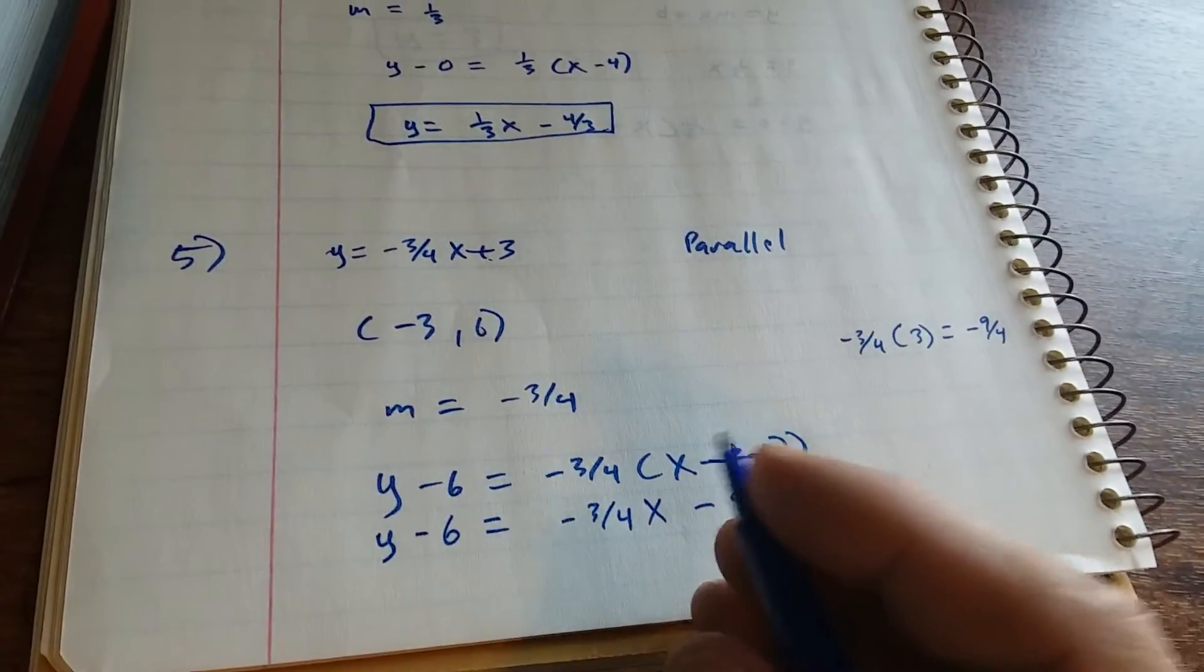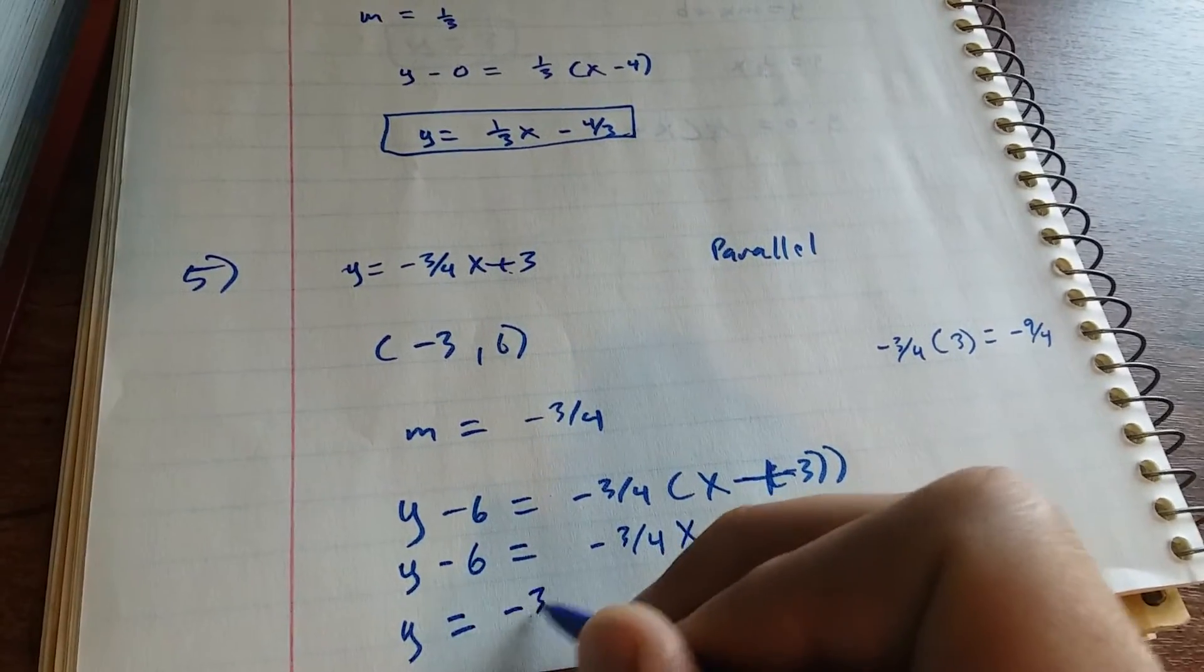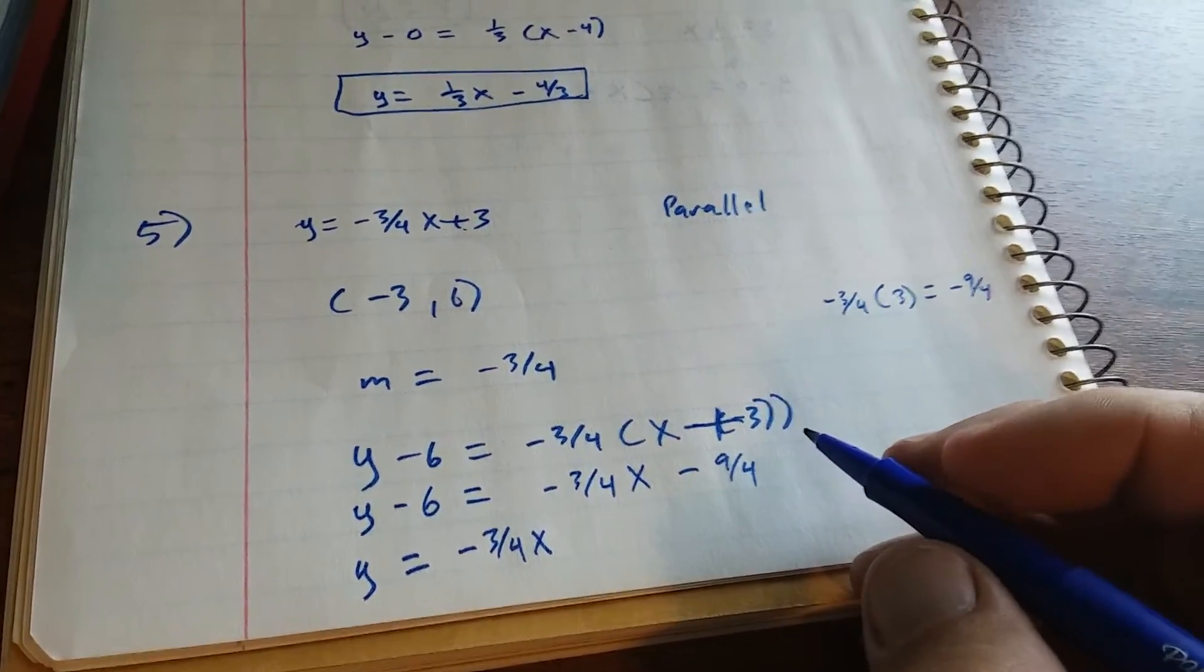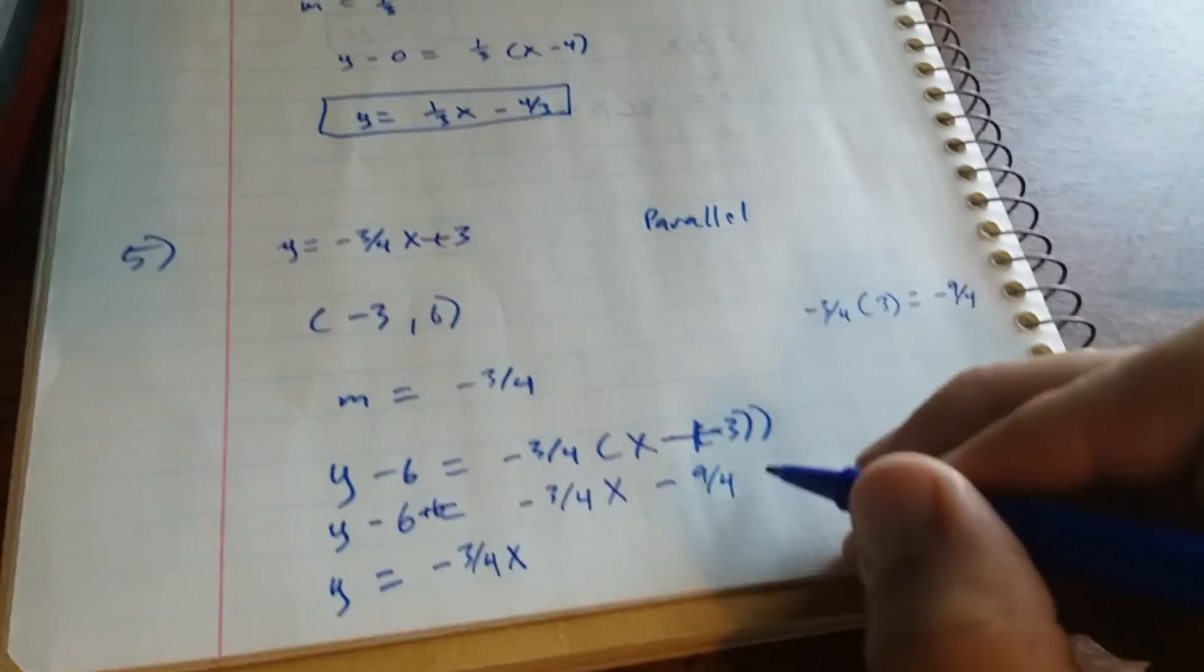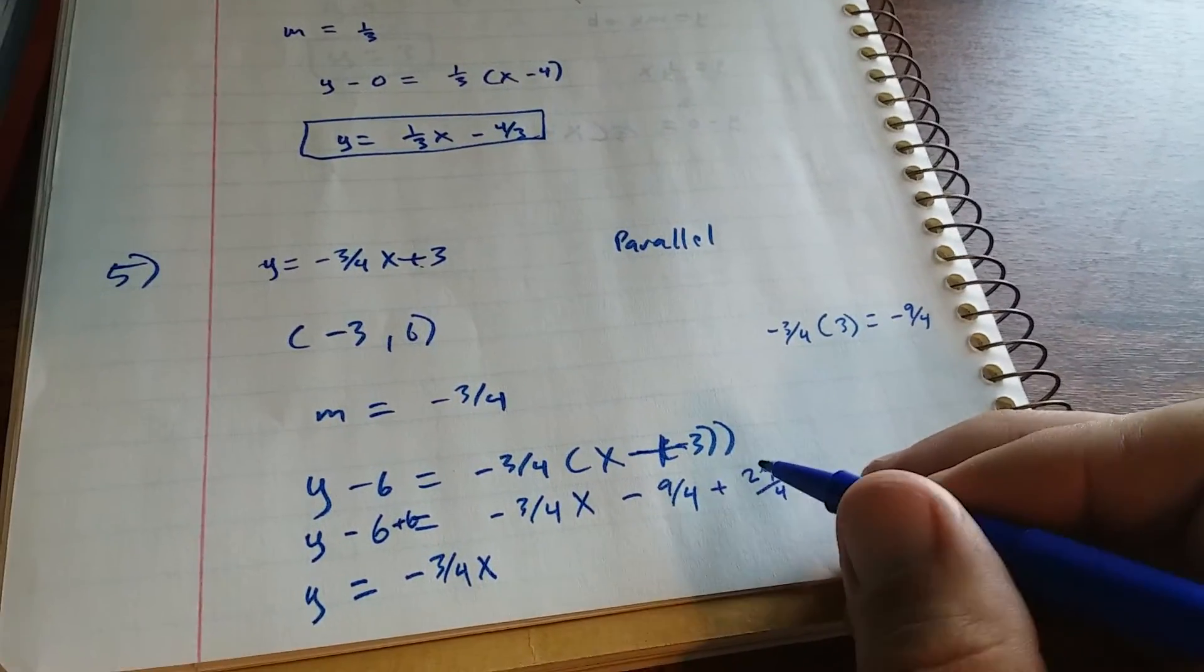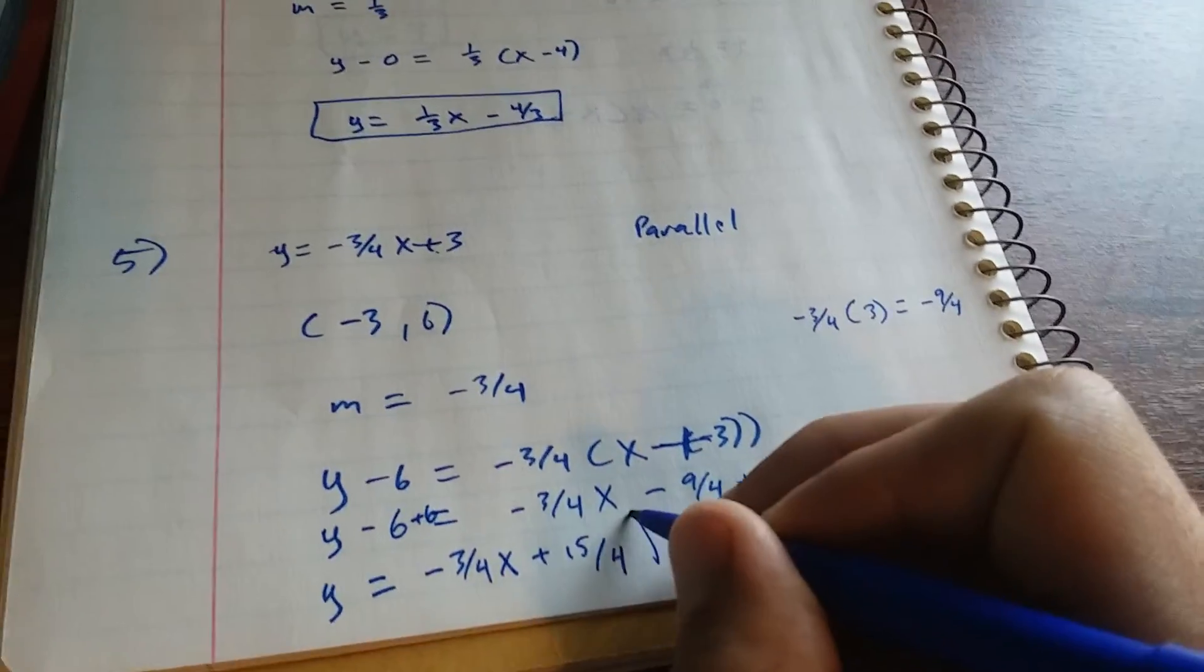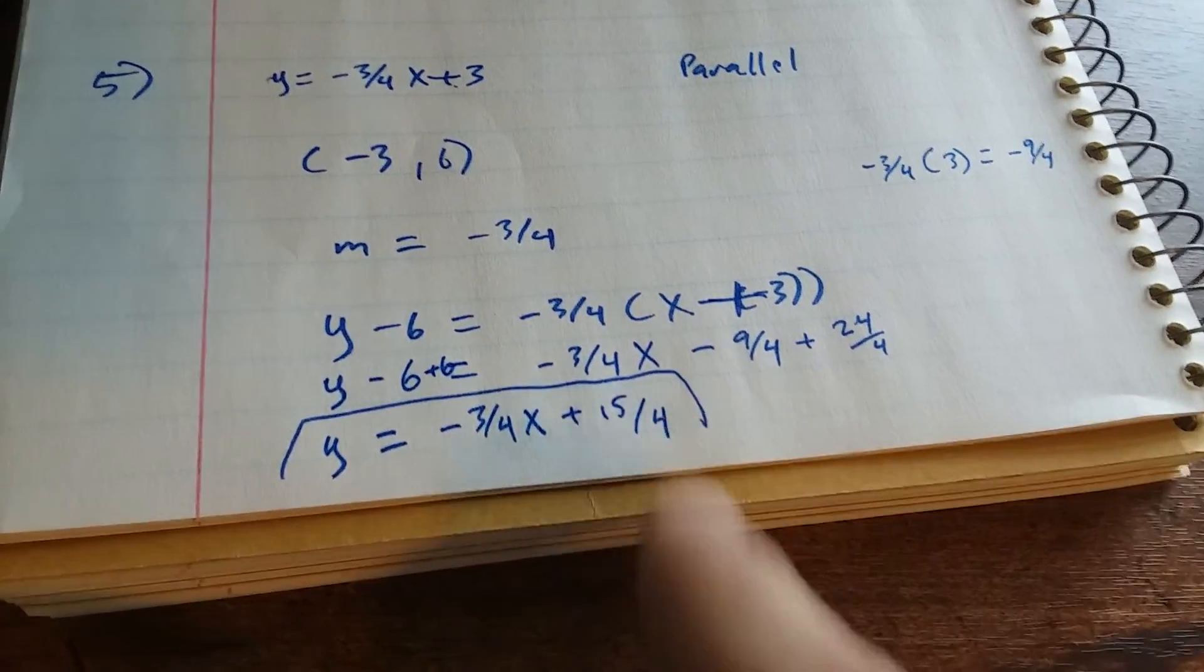And then add 6 to both sides. Okay, 6 is the same thing as 24 over 4. So I'm adding 6 to both sides here. 24 minus 9 is 15, so you get plus 15/4. Or you could have 3 and 3/4 here.